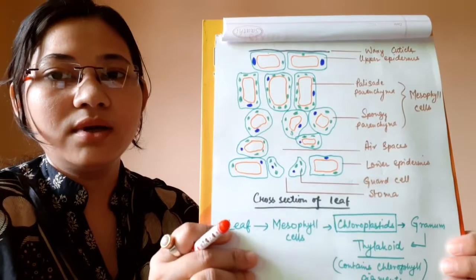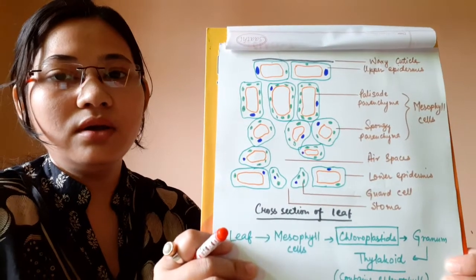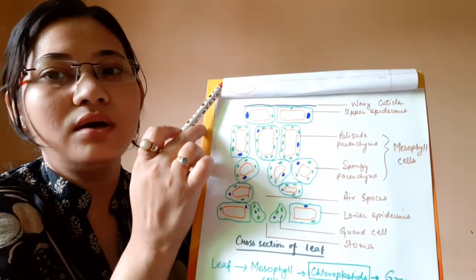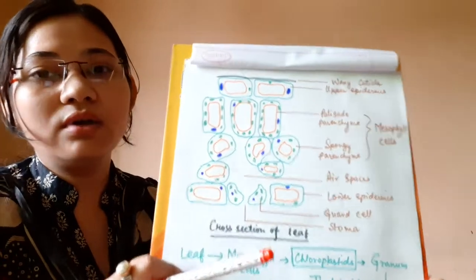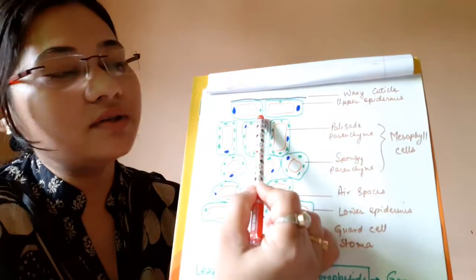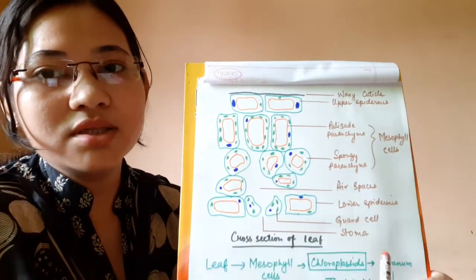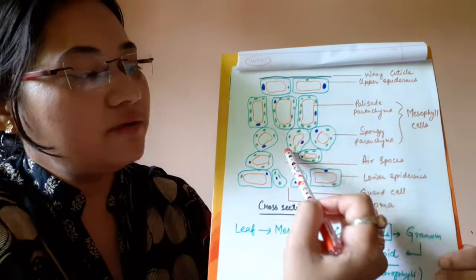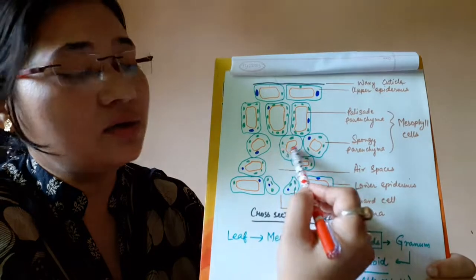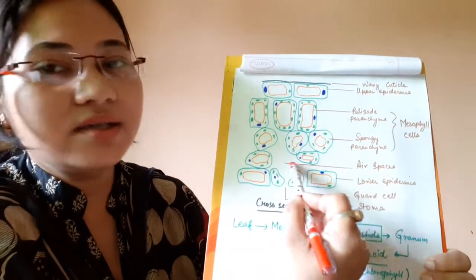Now let us see a simple diagram by which we can find out where chloroplastids or chlorophyll molecules are actually present in the cross-section of a leaf. Here I have drawn a simple diagram of the cross-section of a leaf. The leaf is very thin, but when we observe it under the microscope, we can see layers of cells present. We can see the upper epidermis and the lower epidermis. Just below the upper epidermis, there are some different types of cells — some elongated cells and some irregular cells. In the lower epidermis, guard cells are present.